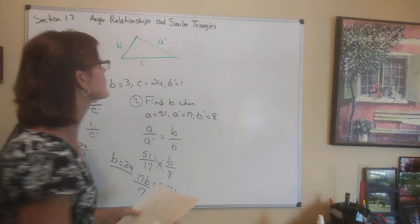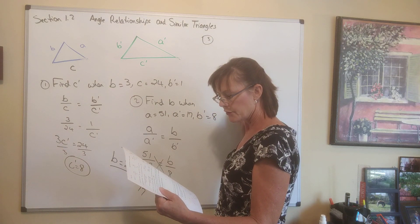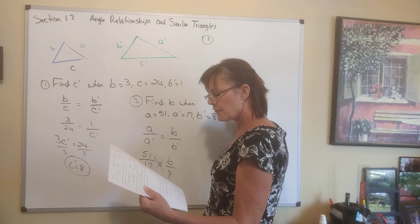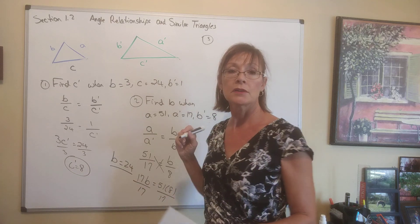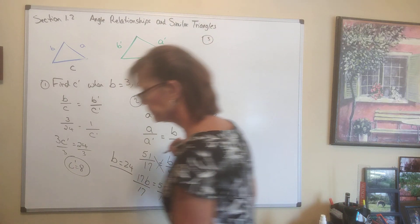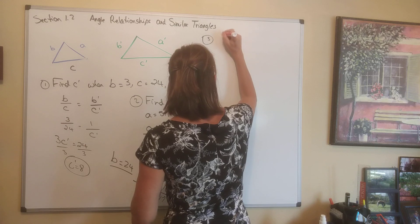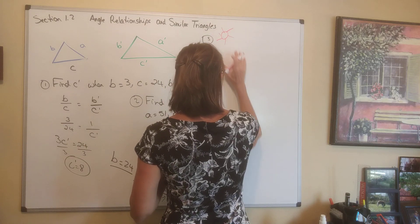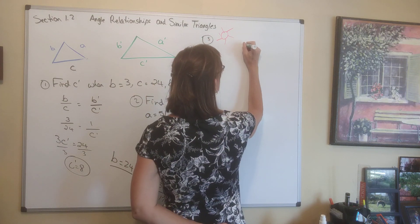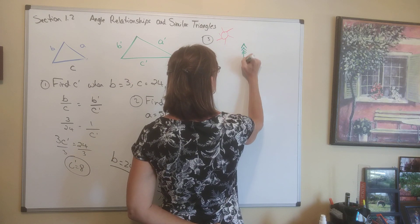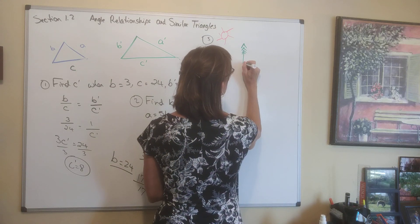Now let's do a word problem. Number 3 says: a tree casts a shadow of 31 feet. At the same time, a 5-foot vertical pole casts a shadow of 0.56 feet. How tall is the tree? We need to draw a picture. Here is the sunshine hitting a tree, and the tree is casting a shadow on the ground.